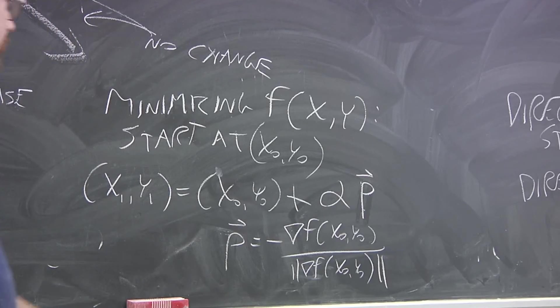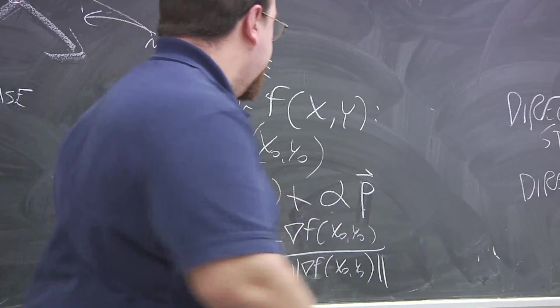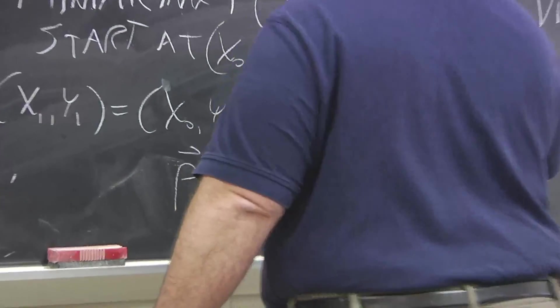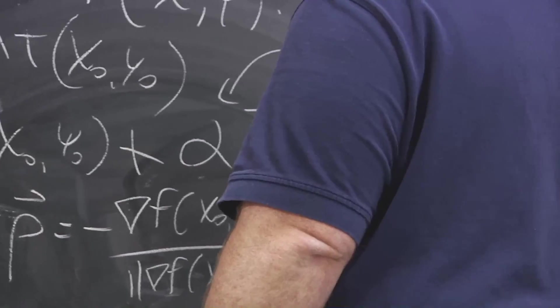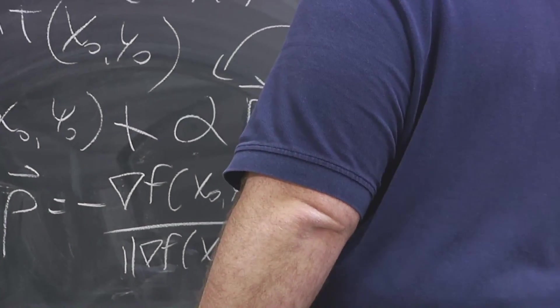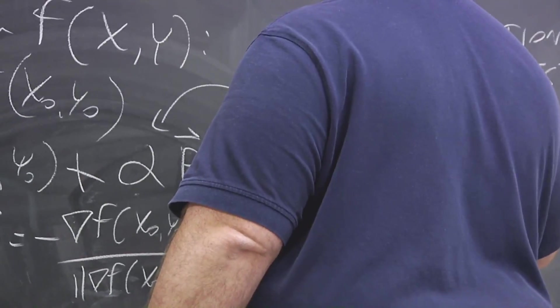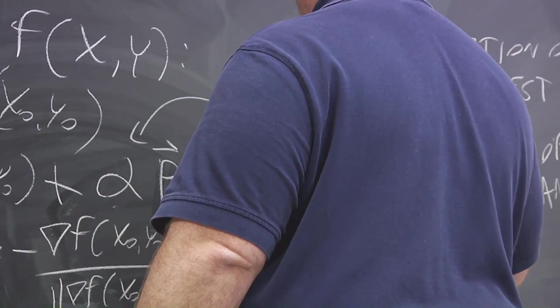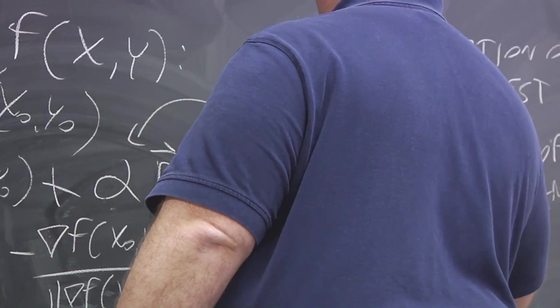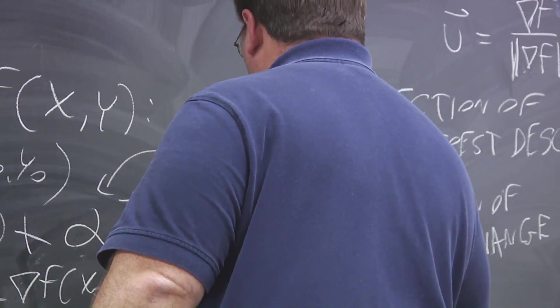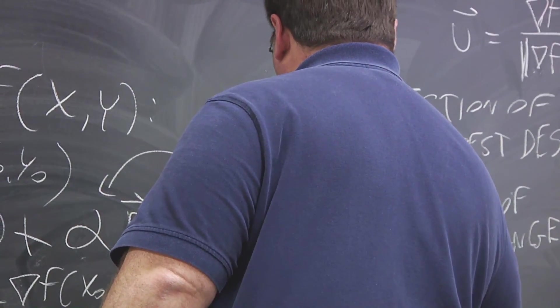So, in order to choose alpha, you solve a single variable minimization problem, like you did in 167.